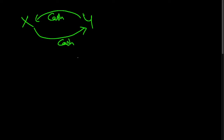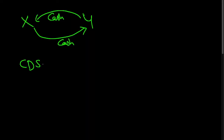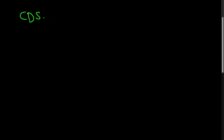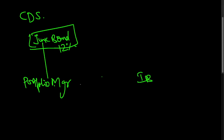Let's start with credit default swaps (CDS). Imagine a portfolio manager who has invested in a junk bond. Junk bonds are risky bonds with a high rate of return but also very high risk. Say this portfolio manager invested in a junk bond offering 12% interest, but is scared the company might default on interest payments, affecting investors. So the portfolio manager enters into an agreement with an investment bank.